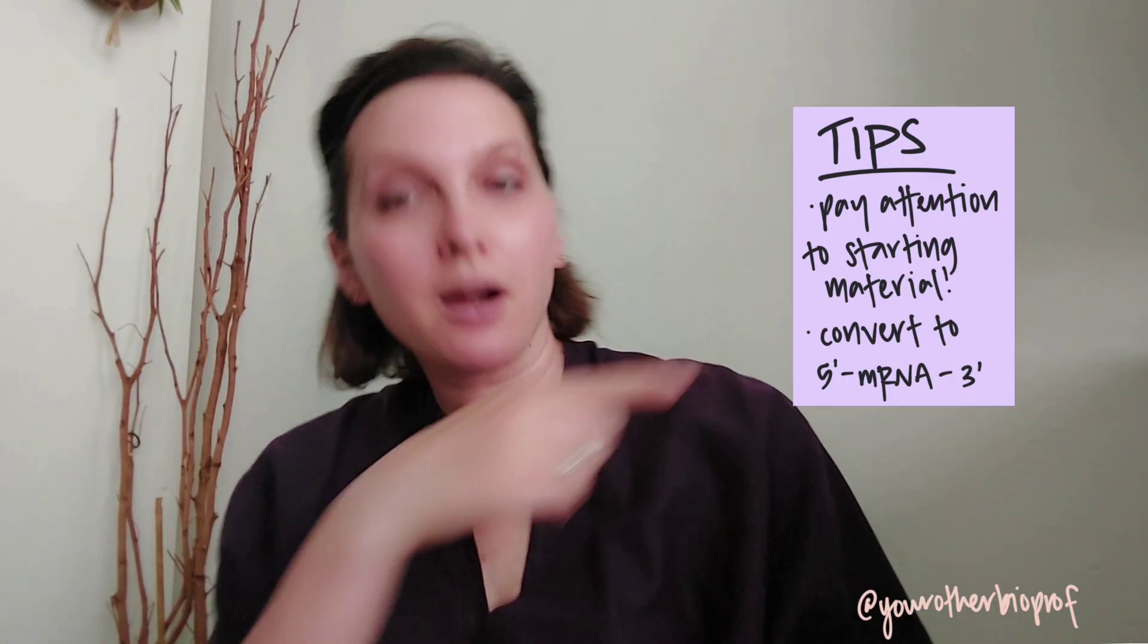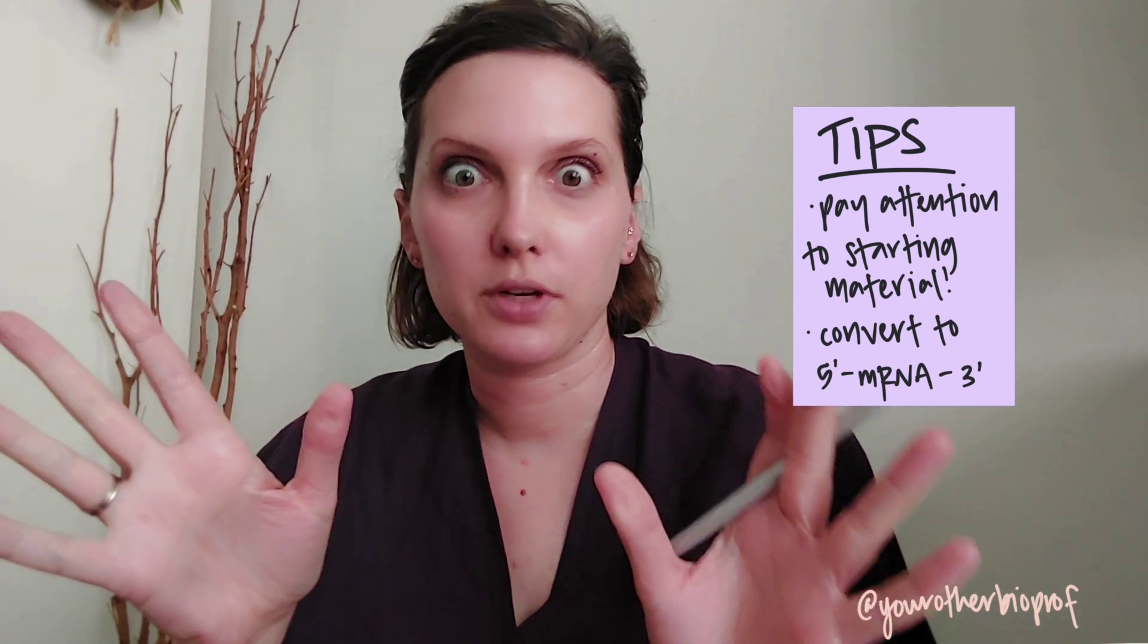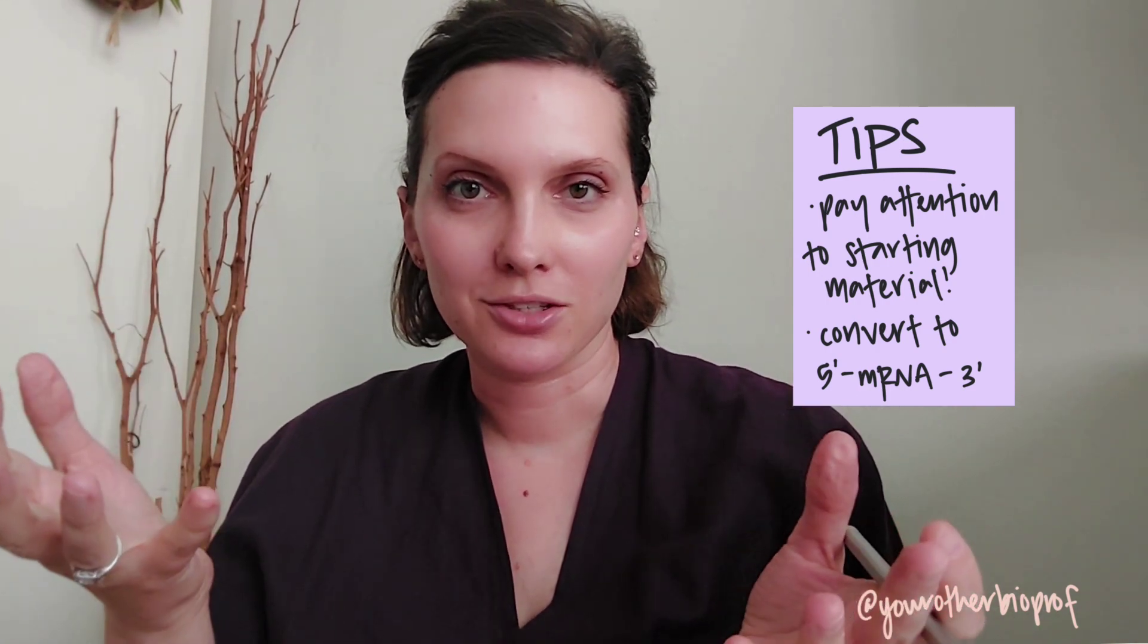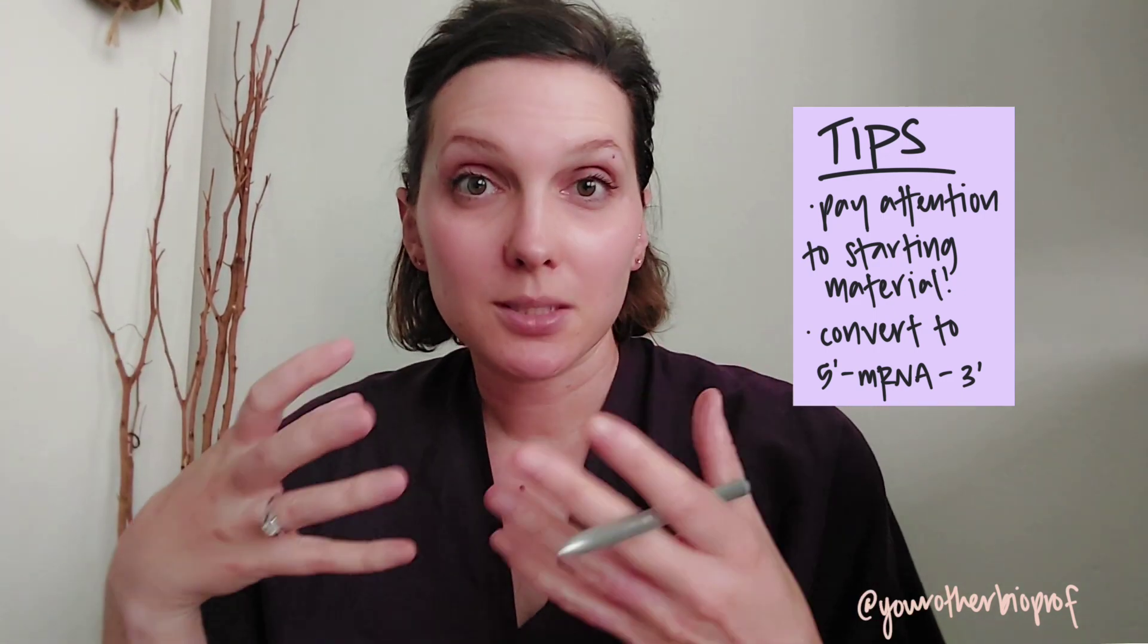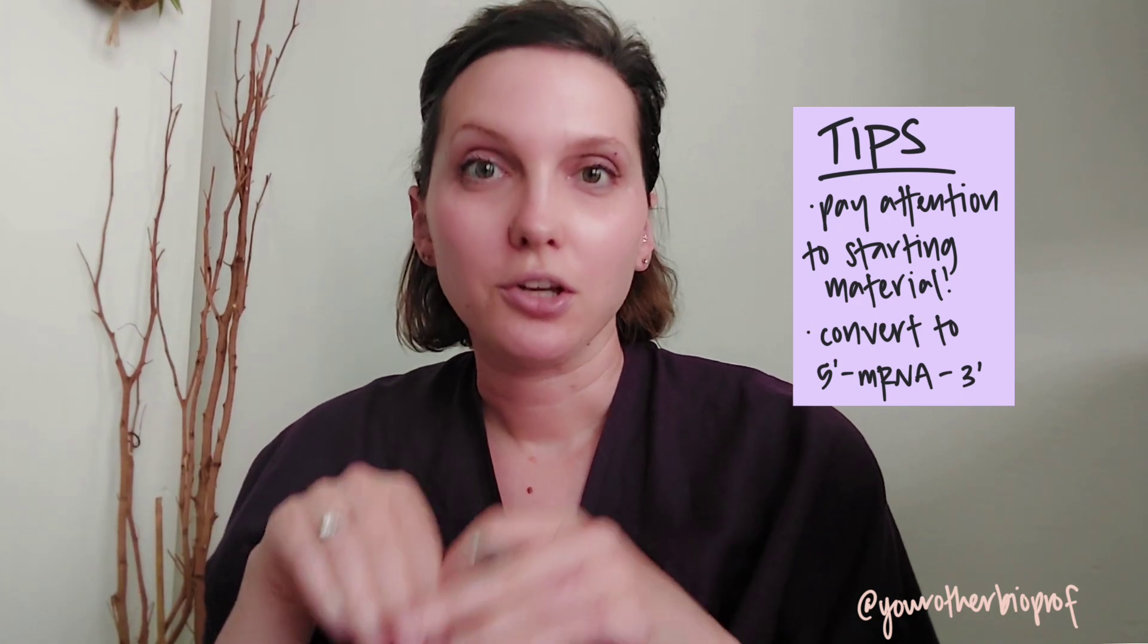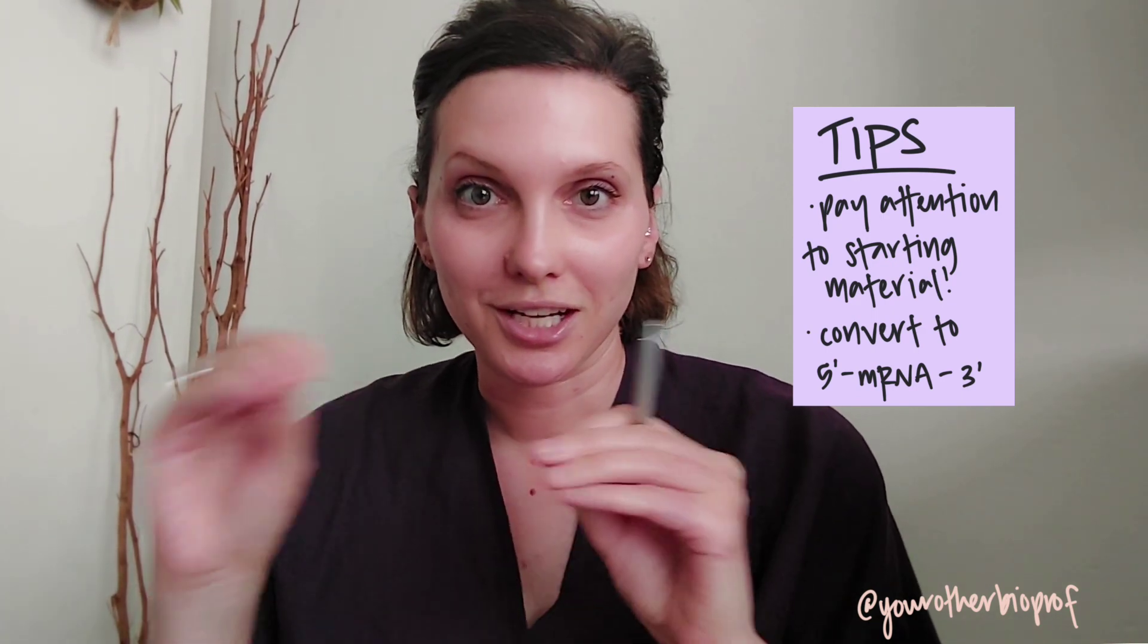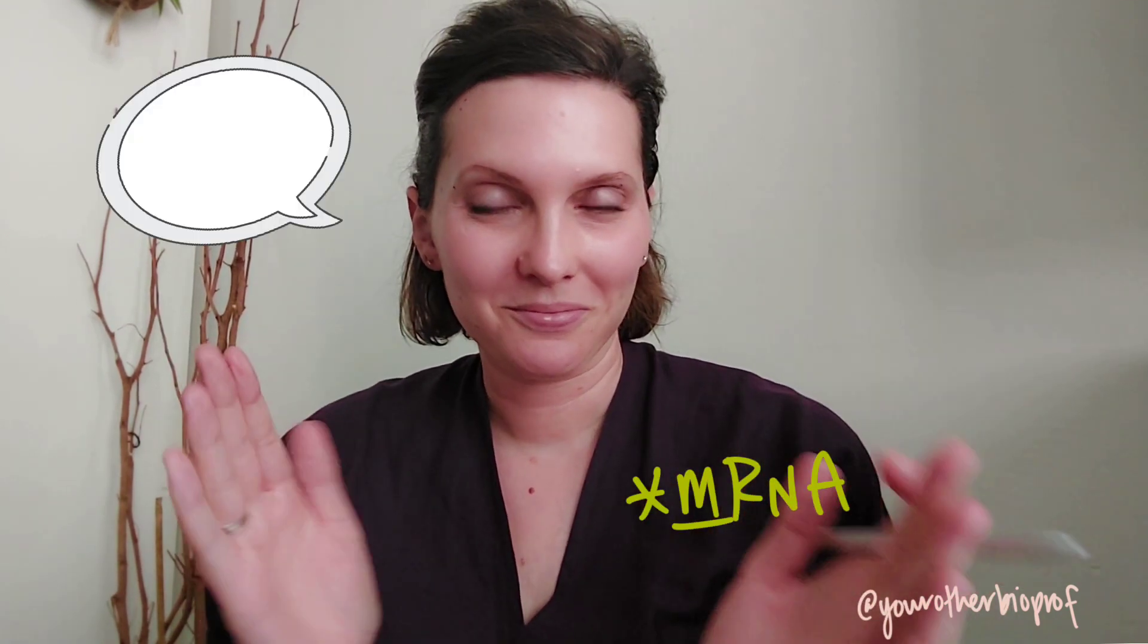So the big takeaways here: pay attention to what you're starting with. It can be so frustrating to miss a problem because you thought you had RNA and it was actually DNA. So if you get something that's not RNA and you need to put it into a codon table, you're going to have to do some conversions to get it into a place where you've got RNA five prime to three prime. Throw me a like if this was helpful, subscribe or check out my website for even more biology videos, and I will see you next time.